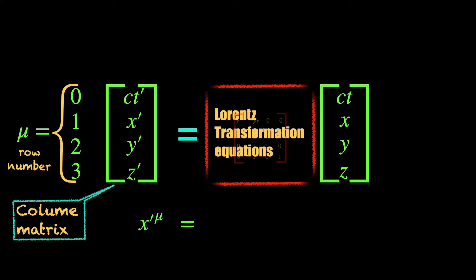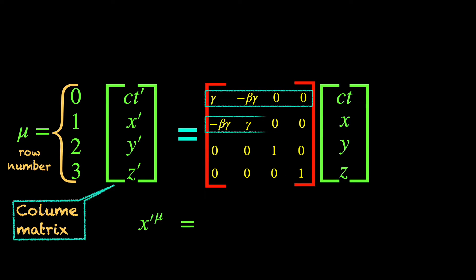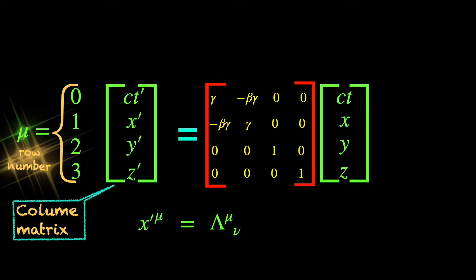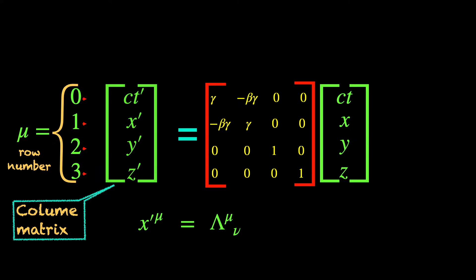Then, on the right, there is the Lorentz matrix, a 4 by 4 array of entries, so 4 rows and 4 columns. The symbol we use for it is lambda mu nu. The four rows tracked by the superscript index mu with its four values 0, 1, 2, 3 as we mentioned earlier and four columns similarly tracked by the subscript index nu.